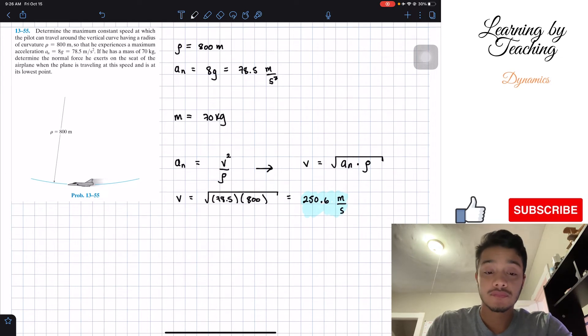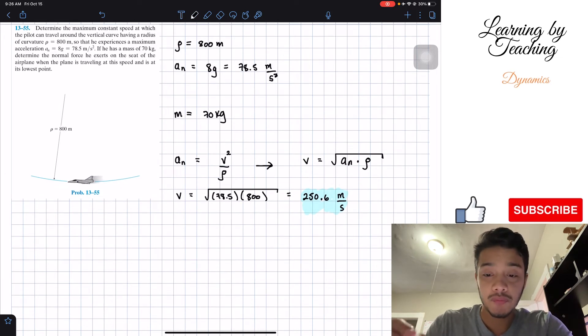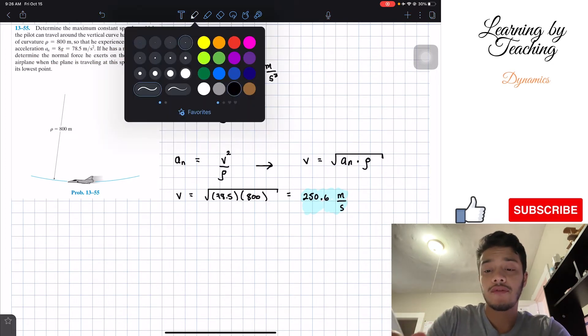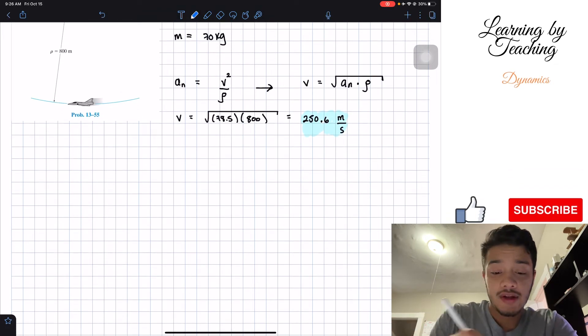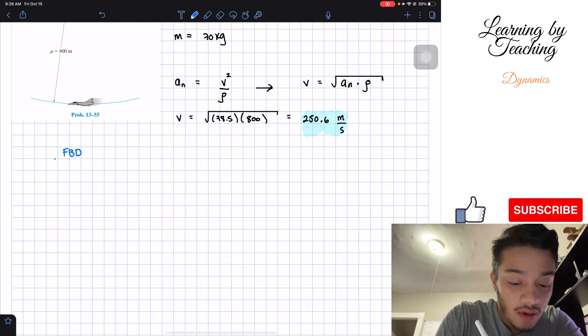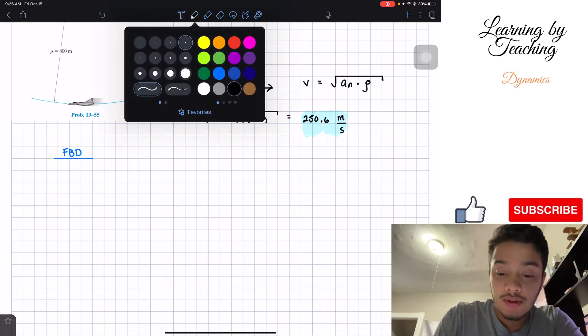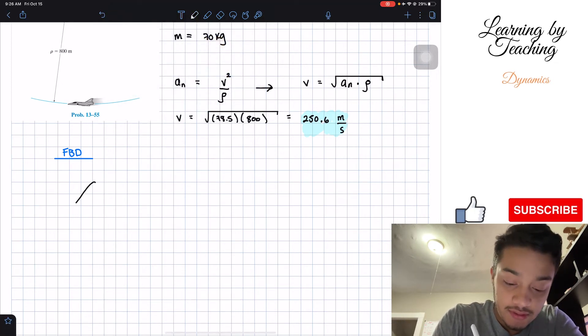Next, we need to determine the normal force he exerts on the seat. So, in order to do this, we're going to draw a free body diagram of our pilot. We're going to do a free body diagram. And the pilot, while it's driving, will have a similar object like this.